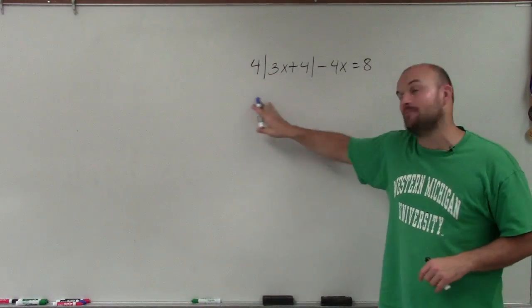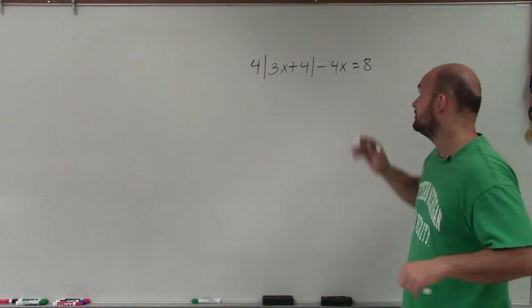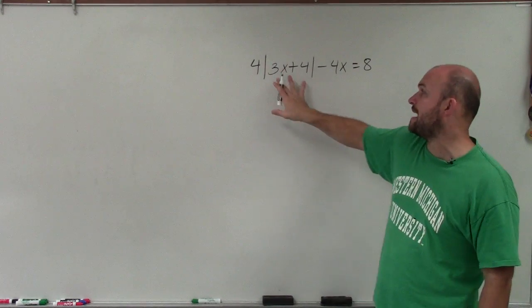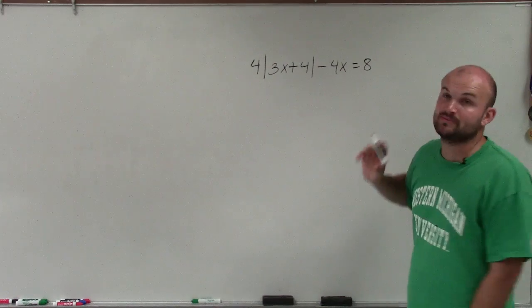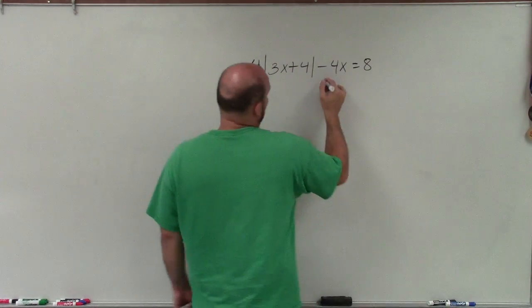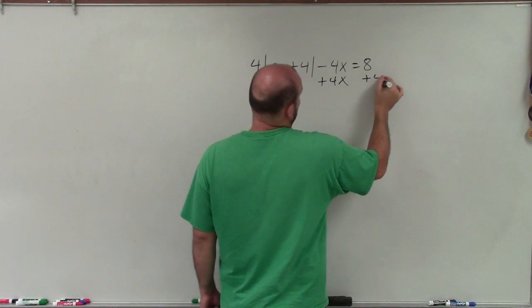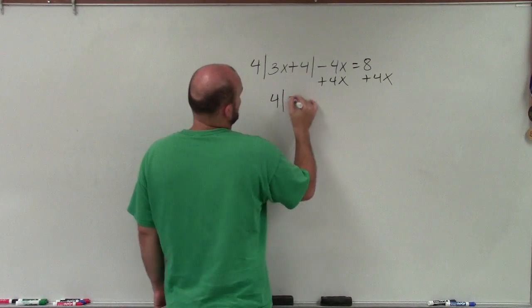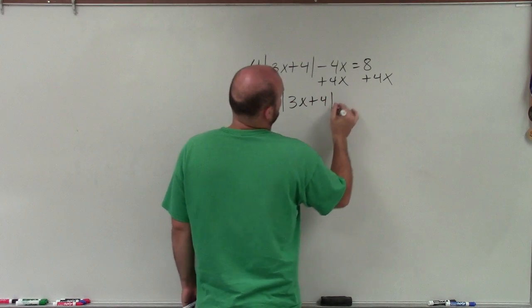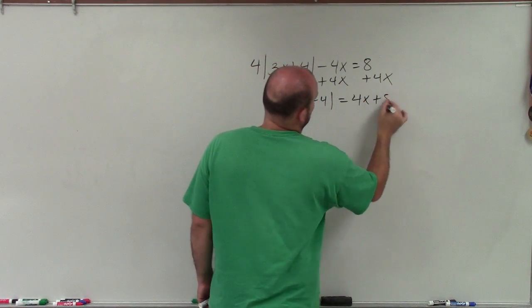To do that, I need to undo all the operations that are happening to my absolute value. You can see here, I'm having my absolute value being multiplied by 4 as well as being subtracted by 4x. So I'm going to undo each of those. I'll add 4x to both sides first. Then I have 4 times the absolute value of 3x plus 4 equals 4x plus 8.